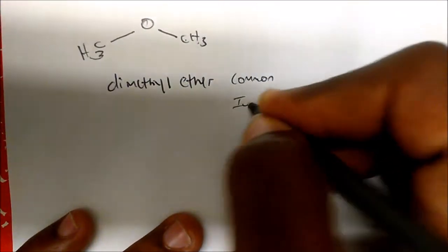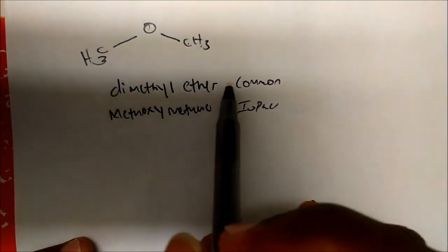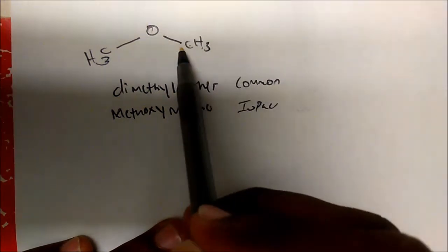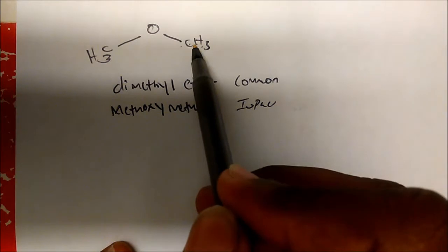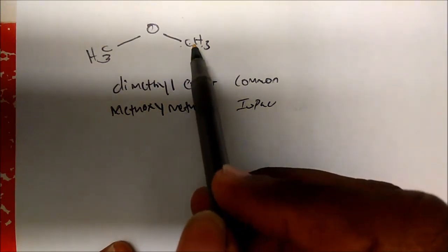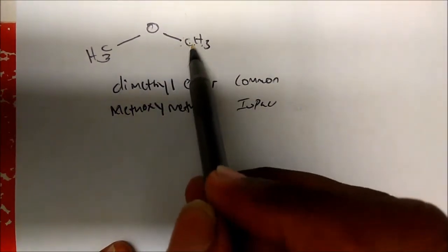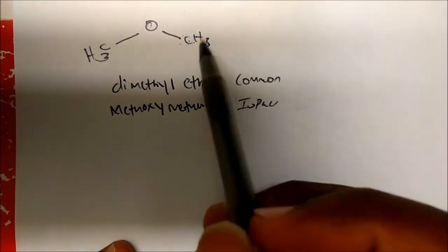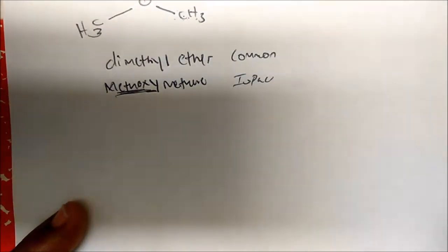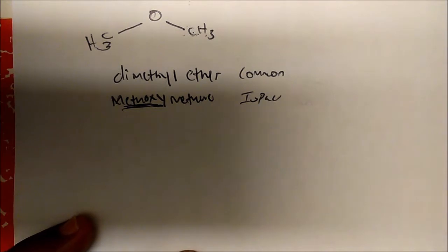The IUPAC name is methoxymethane. For IUPAC naming, you identify your longest carbon chain — in this case it's just one carbon, so the parent is methane. The 'oxy' part here is something I want to emphasize: whenever we deal with ethers for their IUPAC names, the substituent as a whole is called methoxy, ethoxy, propoxy, and so on.